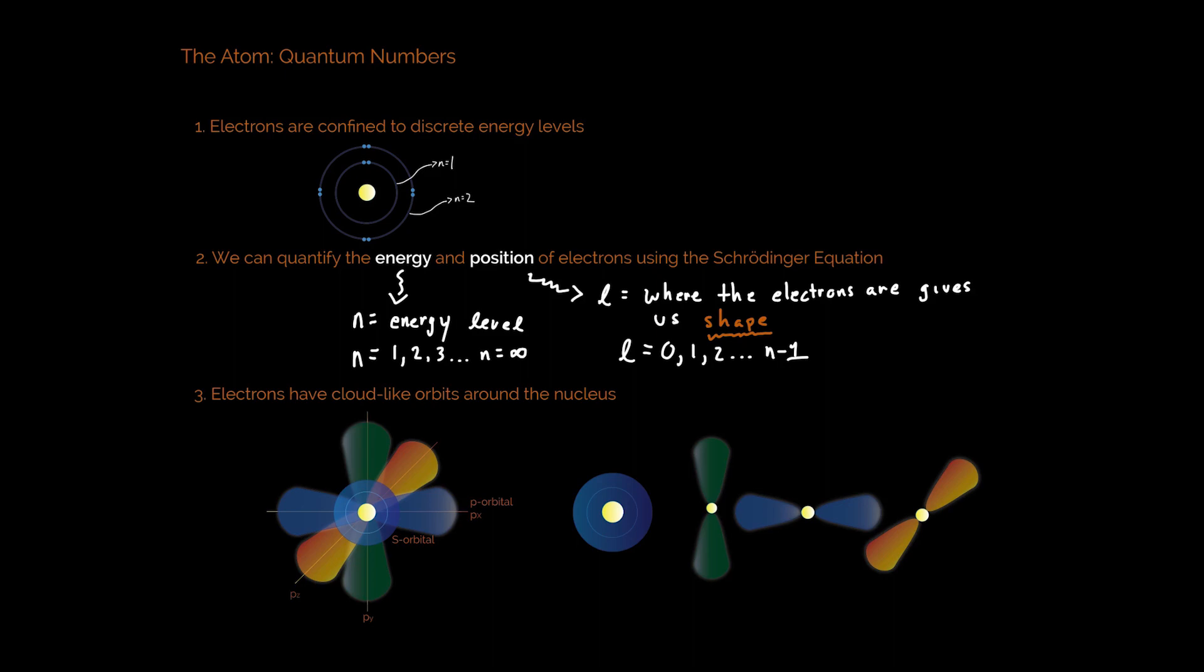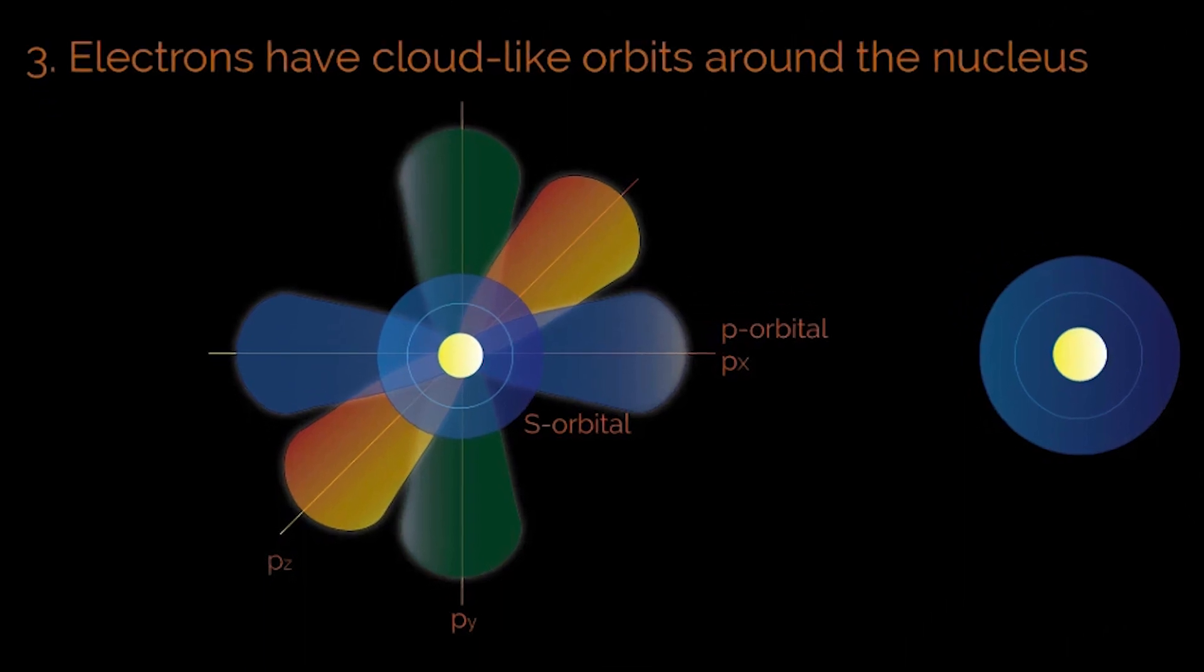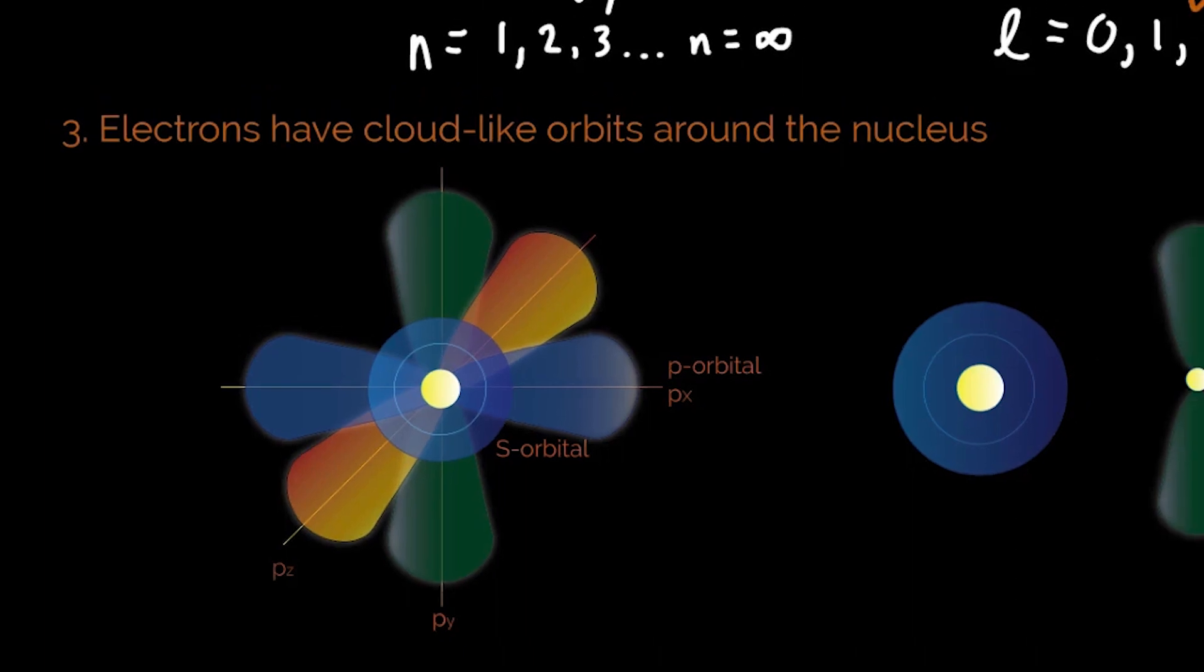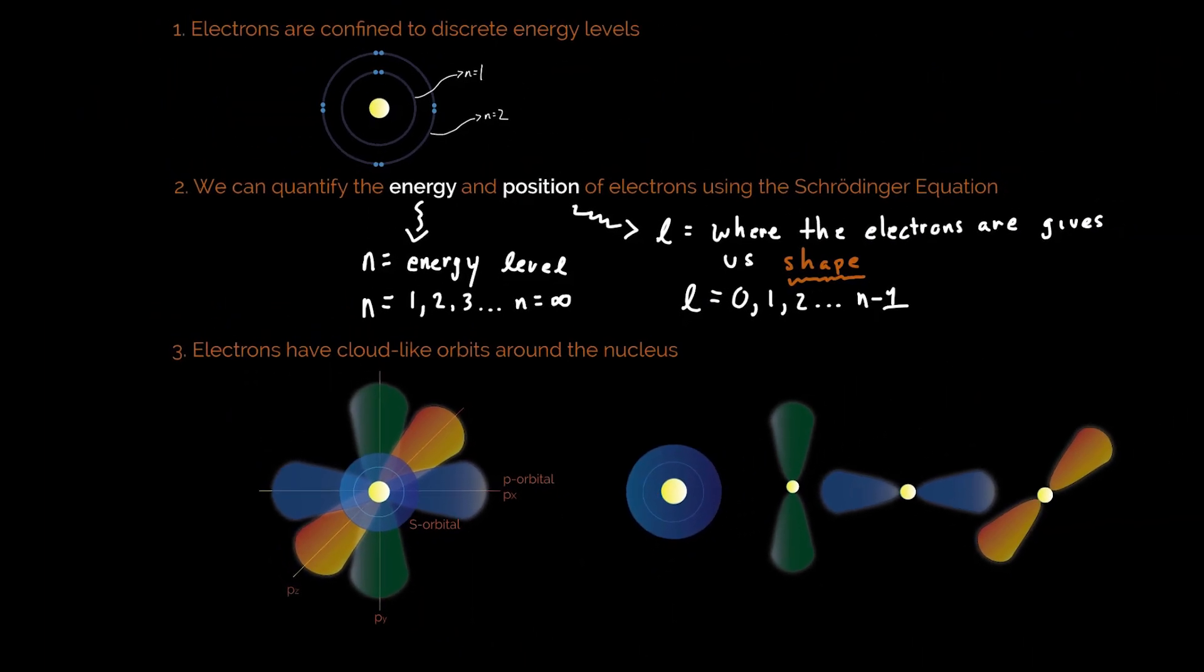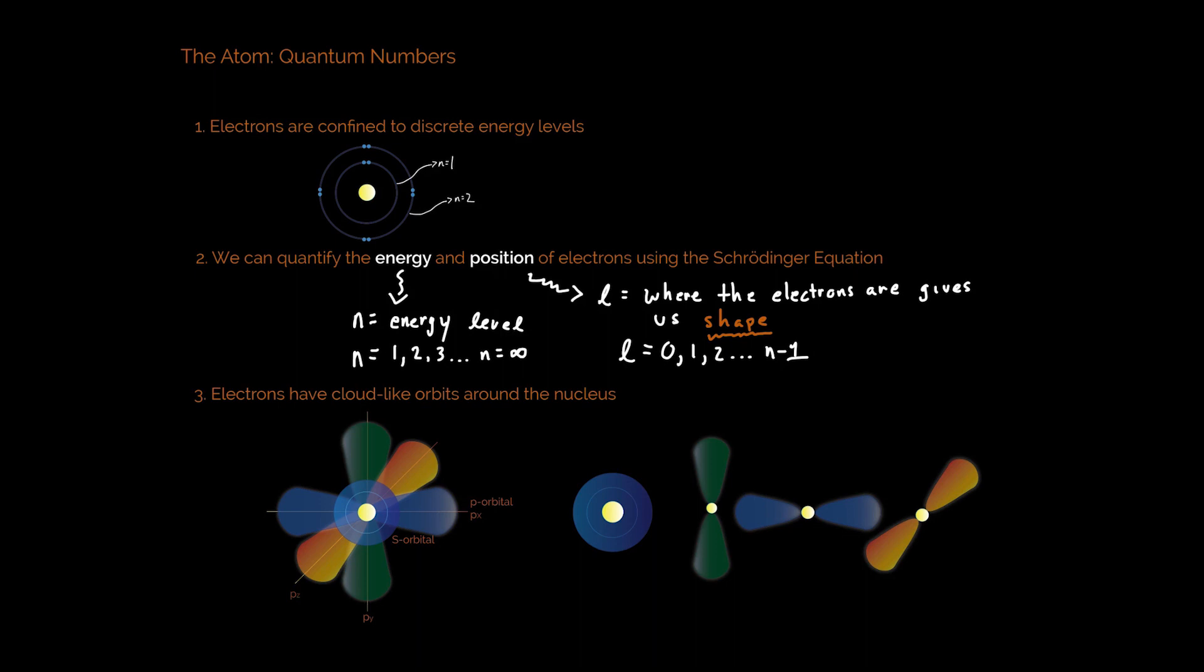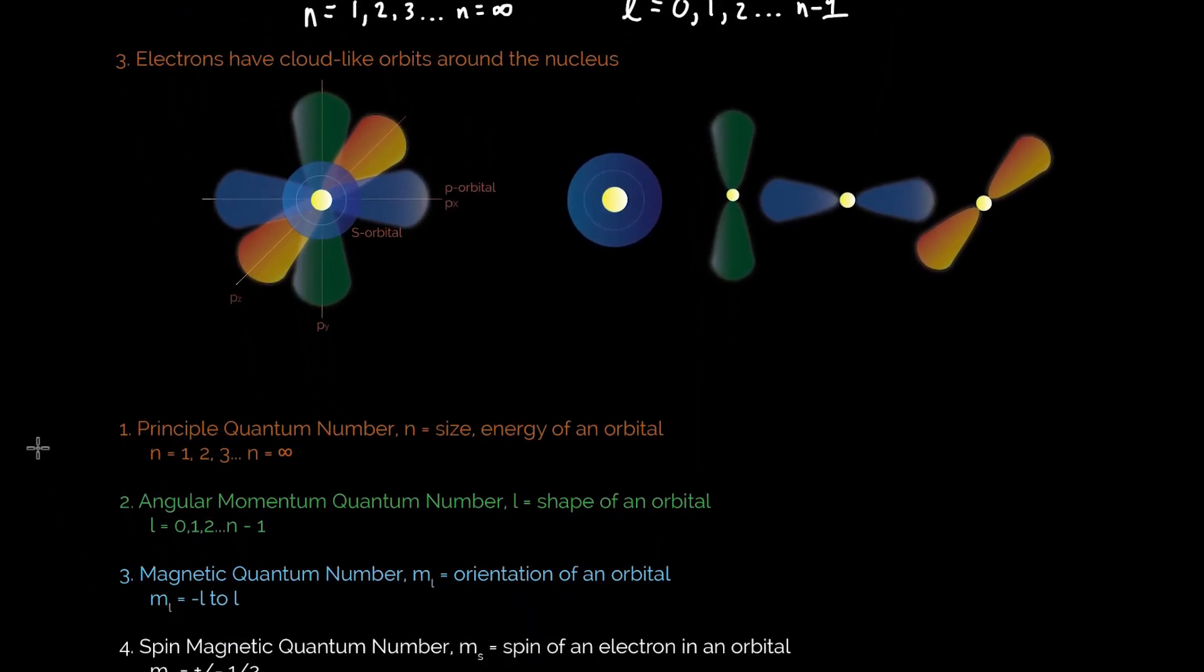And so you see right here the modern atomic model, and notice how different it is. But one thing remains very consistent, is that no matter what your orbitals look like, no matter how complex they become, you're still going to have electrons in discrete energy levels. And that's where we start with the quantum numbers.